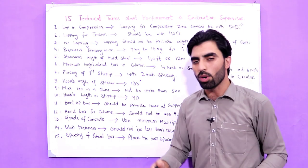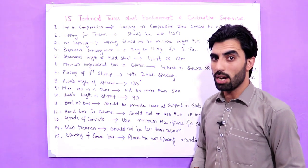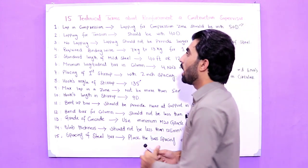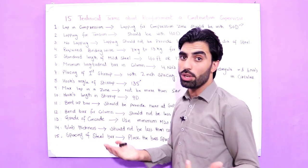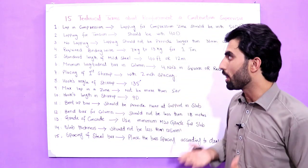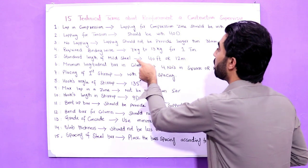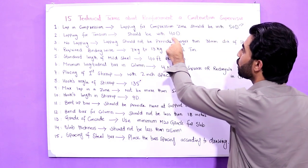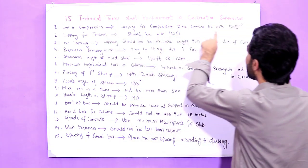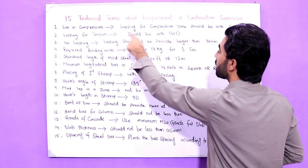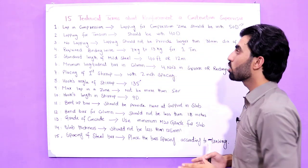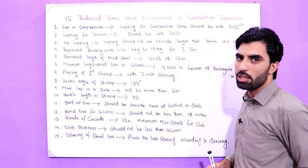The second term is lapping for tension. In tension we have members like beams. The lapping length for tension should be 40D, where D is the diameter of the steel bar you are using in the tension member, such as a beam. So compression is 50D and tension is 40D.